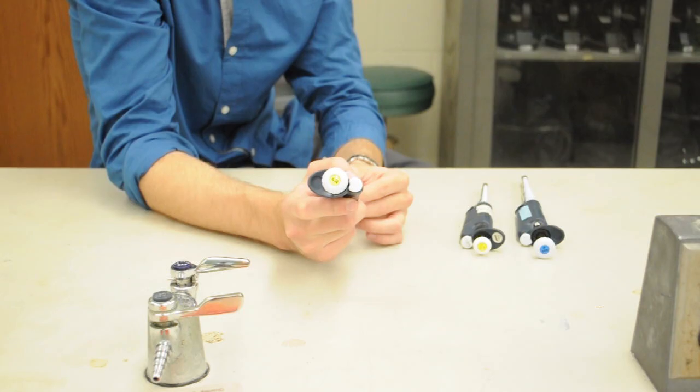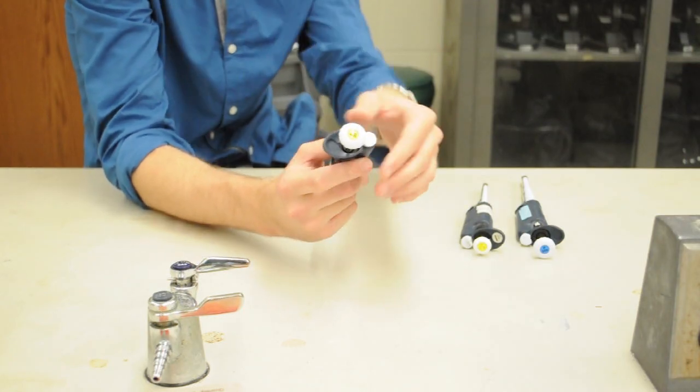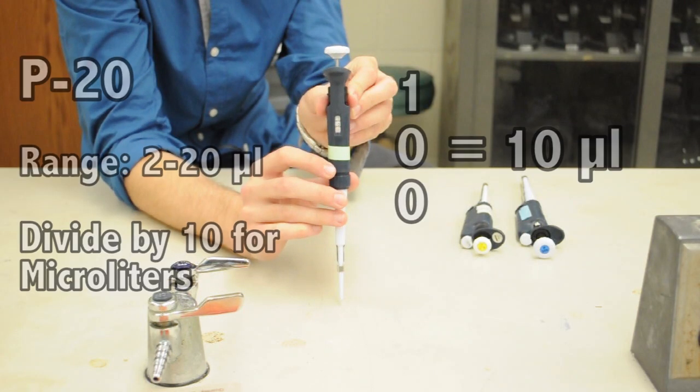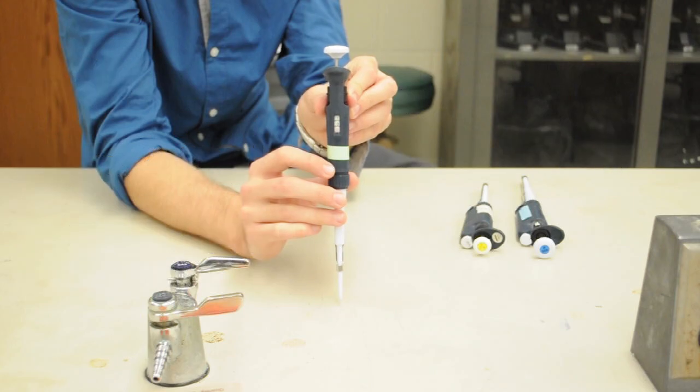We'll first take a look at the P20 and how to read its volume setting. It has a range of 2 to 20 microliters and you divide the 3 digit number by 10 in order to get the number of microliters that you'll be dispensing.